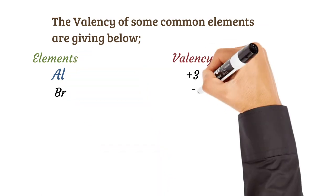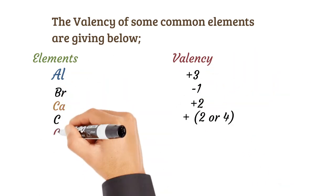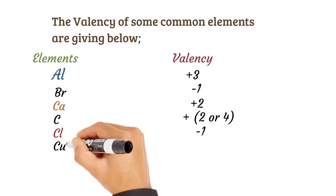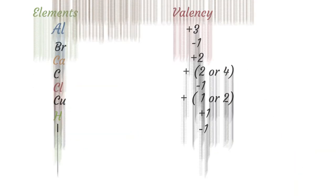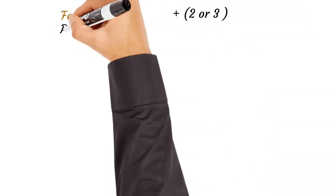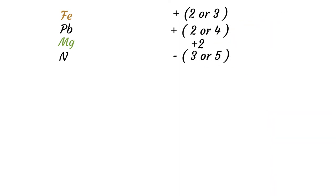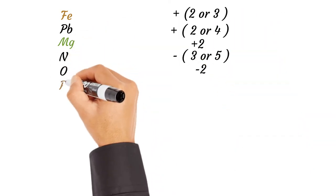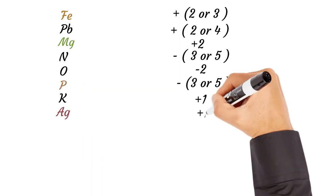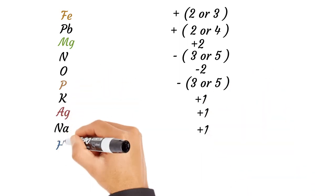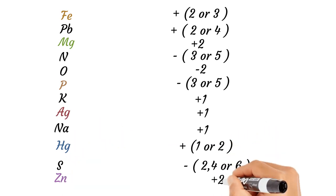Elements and their valencies: Aluminum +3, Bromine -1, Calcium +2, Carbon 2 or 4, Chlorine -1, Copper 1 or 2, Hydrogen +1, Iodine -1, Iron 2 or 3, Lead 2 or 4, Magnesium +2, Nitrogen 3 or 5, Oxygen -2, Phosphorus 3 or 5, Potassium +1, Silver +1, Sodium +1, Mercury 1 or 2, Sulfur 2, 4 or 6, and Zinc +2.